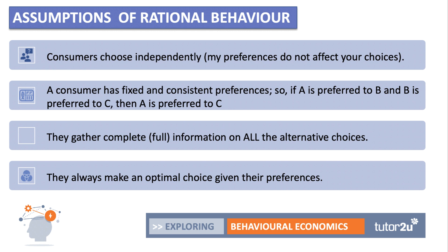The second assumption is that a consumer has fixed and consistent preferences. So if A is preferred to B and B is preferred to C, then normally A would be preferred to C. We also assume that people gather complete, full information about all of the alternative choices they have, and given this full information, they're able to make the calculations and make an optimal choice given their preferences.